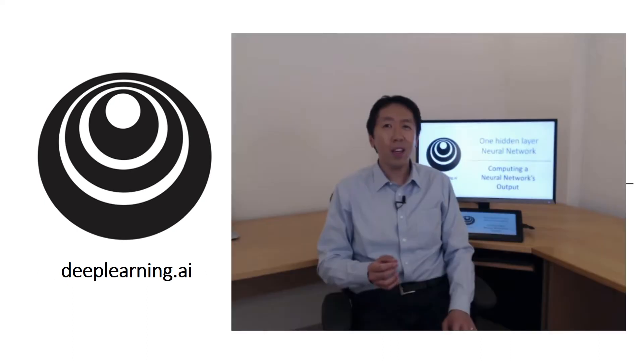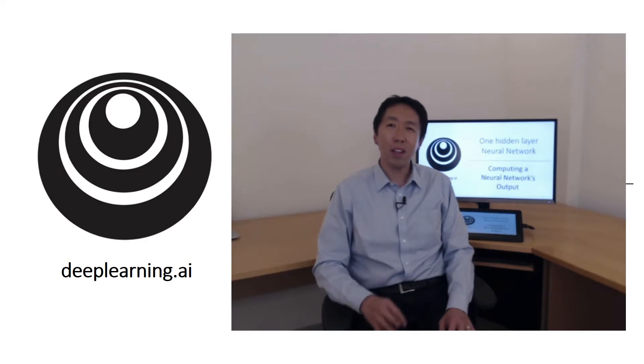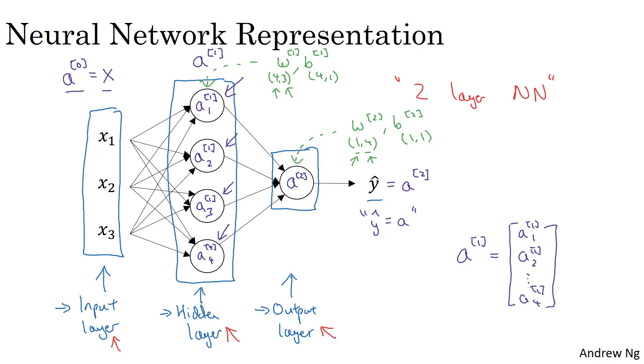In the last video, you saw what a single hidden layer neural network looks like. In this video, let's go through the details of exactly how this neural network computes its outputs. What you see is that it's like logistic regression, but repeated a lot of times. Let's take a look. So this is what a two-layer neural network looks like. Let's go more deeply into exactly what this neural network computes.